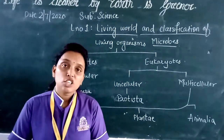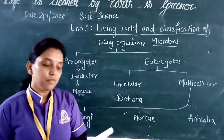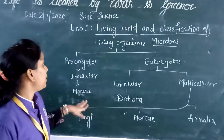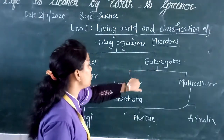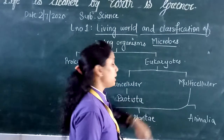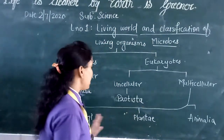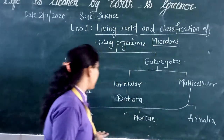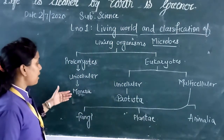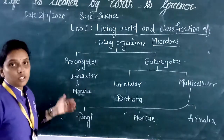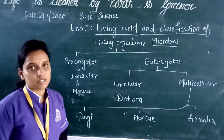Though many systems of classification were introduced, the five kingdom system — with Prokaryotes containing Monera, and Eukaryotes divided into unicellular Protista and multicellular Fungi, Plantae, and Animalia — is widely accepted. The classification of microbes under prokaryotes will be covered in the next session. Thank you.